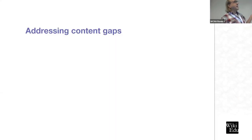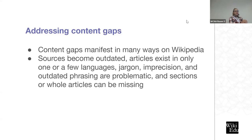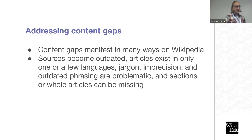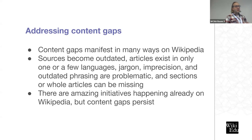I just wanted to define content gaps. Content gaps manifest in many ways on Wikipedia. Sources can become outdated. Articles exist in only one or a few languages. They can be really heavy with jargon, imprecise, outdated with phrasing — and that's very problematic. Sections or whole articles can not exist. So there are a lot of different ways to define gaps. There are many different initiatives already happening on Wikipedia to address content gaps, and yet they still persist because they are difficult to deal with.